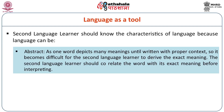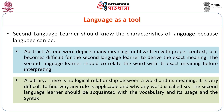What do we mean by abstract language? As one word depicts many meanings until written with proper context, it becomes difficult for the second language learner to derive the exact meaning. The second language learner should correlate the word with its exact meaning before interpreting. Language is also arbitrary — there is no logical relationship between a word and its meaning. Meaning depends upon the context in which the word is placed. If you put the same word in different contexts, it may bring different meanings. The second language learner should be acquainted with the vocabulary, its usage and its syntax as well.